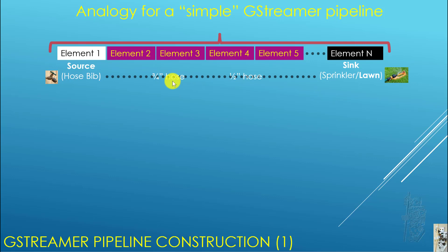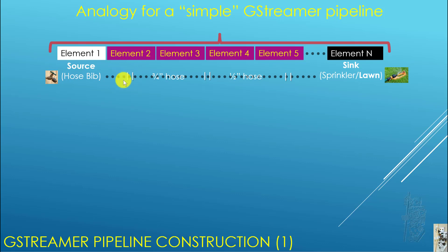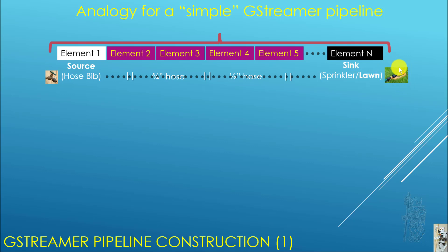I have a three-quarter inch hose and another half-inch hose, and then I have the sprinkler unit to put on my back lawn. We do it automatically without even thinking about it. But there are some very important components — the hose bib and all the hoses are standardized, so all the connectors are standardized and you can hook everything together into one pipeline. So in a GStreamer pipeline, everything comes from a source to a sink.